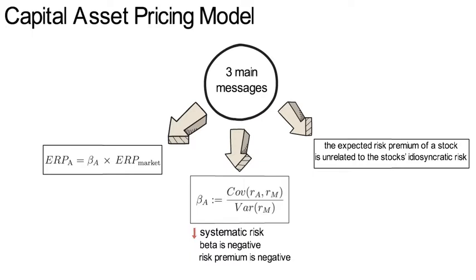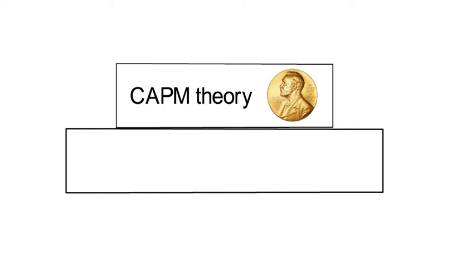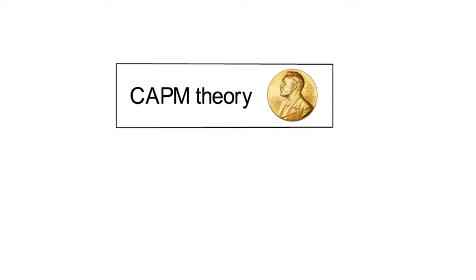Now, for the remainder of this video, let's understand where these CAPM insights come from. The CAPM theory was awarded the Economics Nobel Prize in 1990, and it builds directly on the mean-variance portfolio choice problem of Markowitz. The CAPM insights hold if the following assumptions hold.